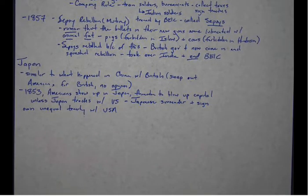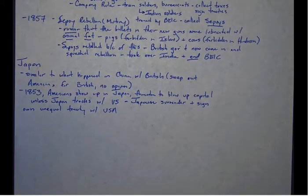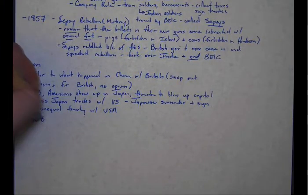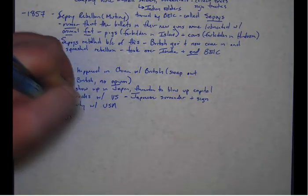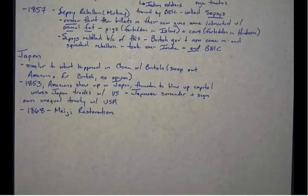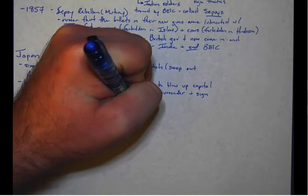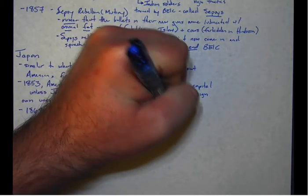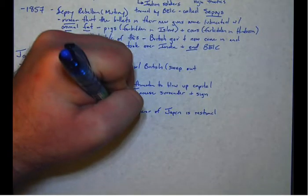But unlike the Chinese, the Japanese are going to look at this as a wake up call. They are going to rapidly change their position. So starting in 1868, we get this rapid turnaround called the Meiji Restoration.